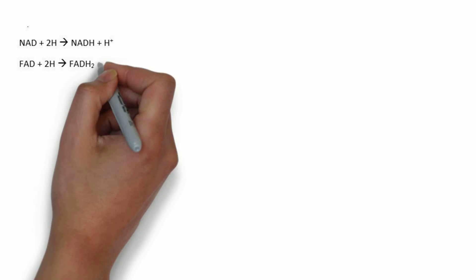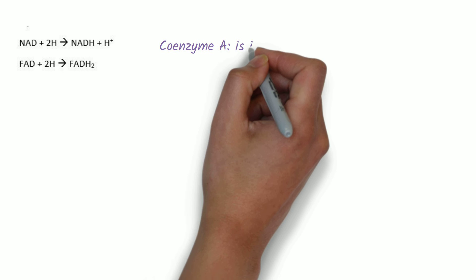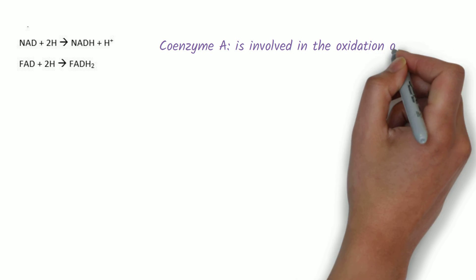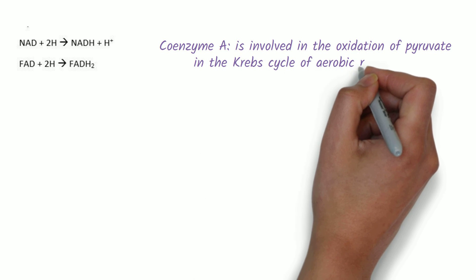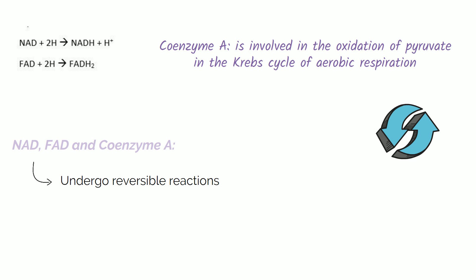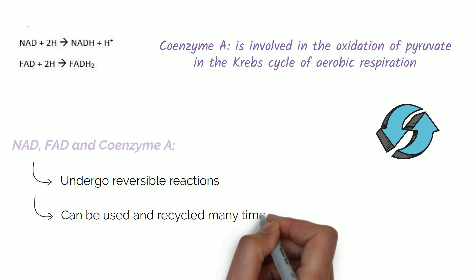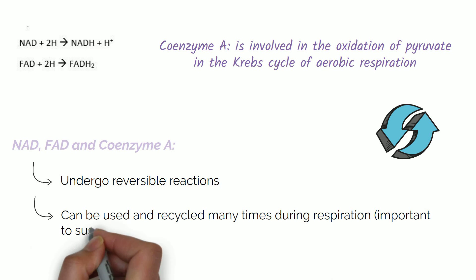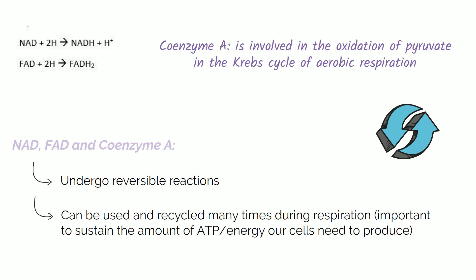Here is the equation for the reduction of NAD and FAD; oxidation is the reverse of these equations. Coenzyme A is involved in the oxidation of pyruvate in the Krebs cycle of aerobic respiration. NAD, FAD and coenzyme A undergo reversible reactions and can be used and recycled many times during respiration, which is important to sustain the amount of ATP our cells need to produce.